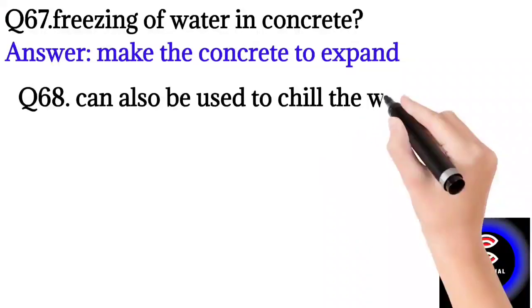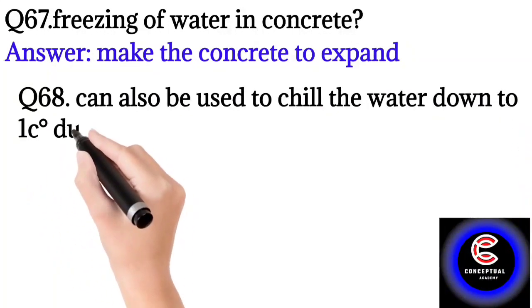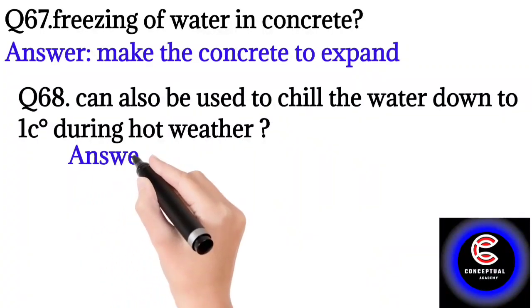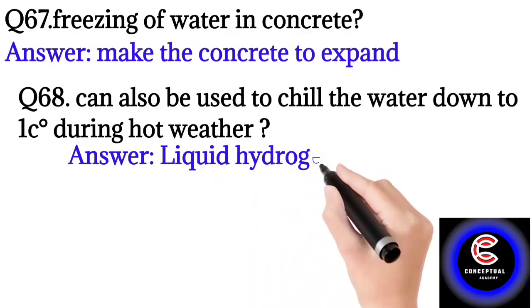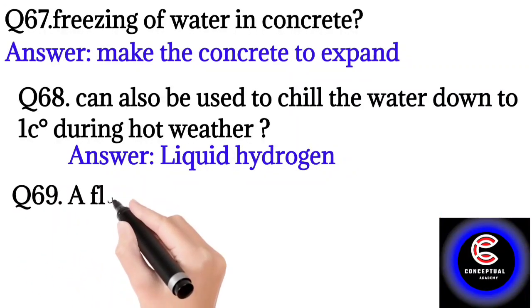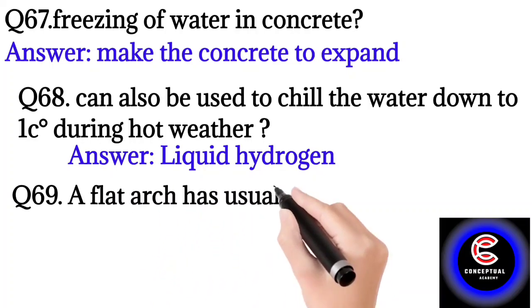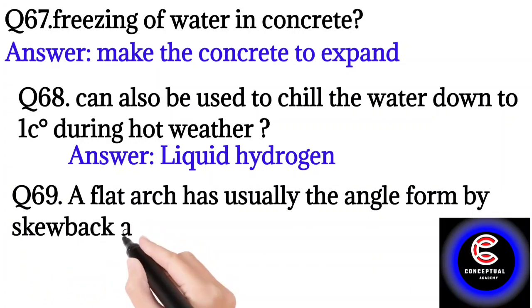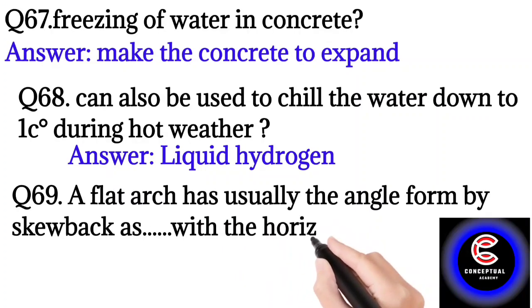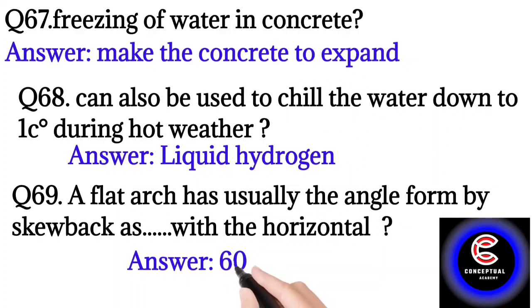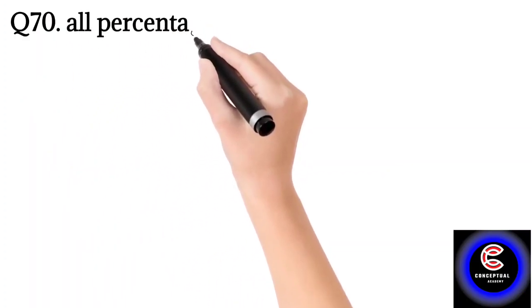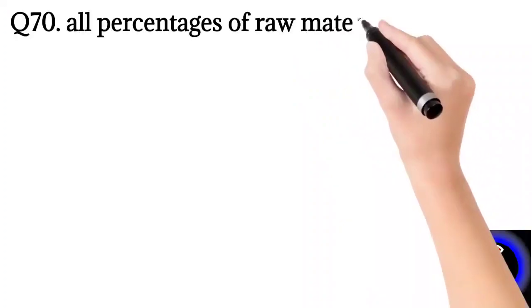Question number 68: Can also be used to chill the water down to 1°C during hard weather? So the answer is liquid hydrogen. Question number 69: A flat arch has usually the angle formed by skewback with the horizontal? So the answer is 60 degrees.